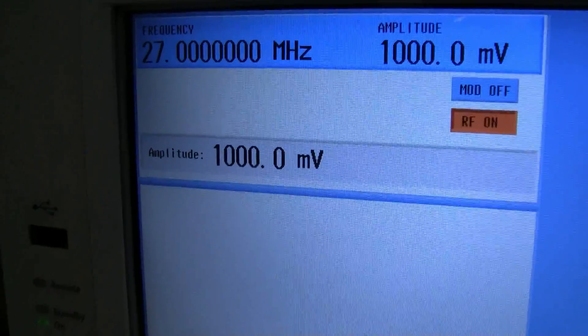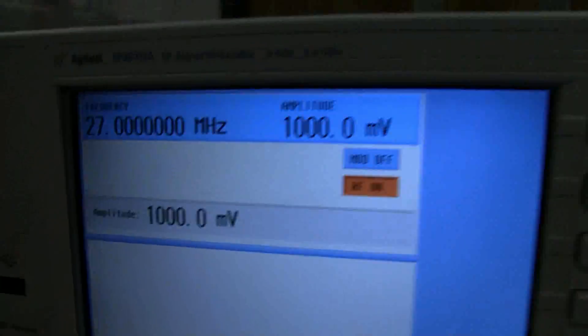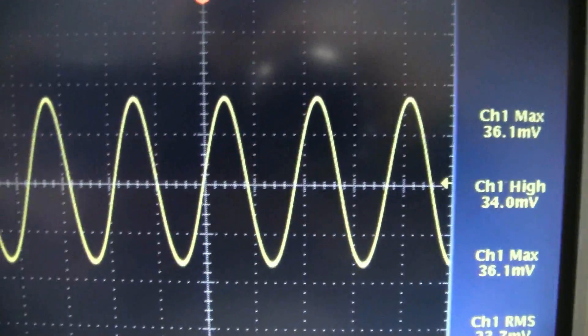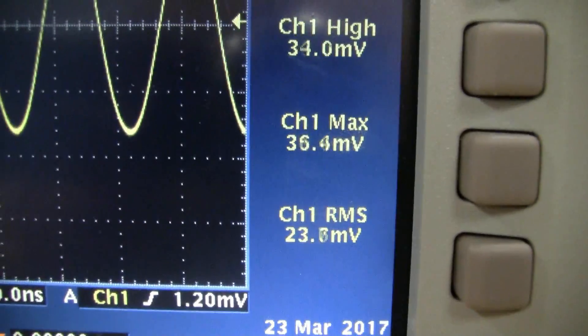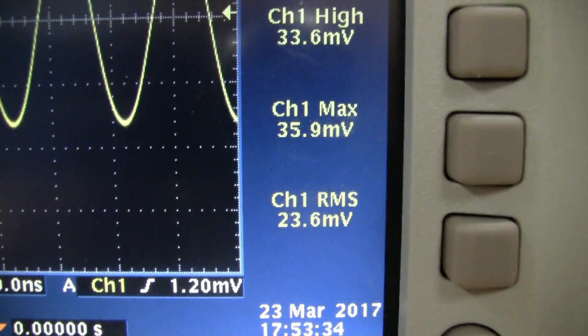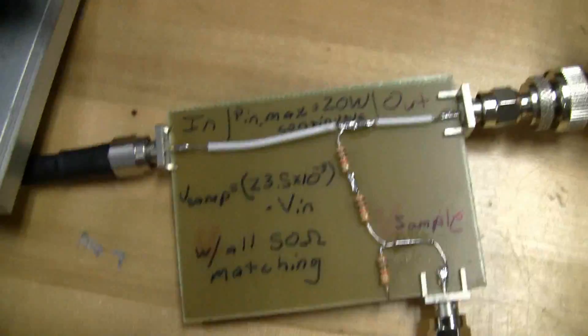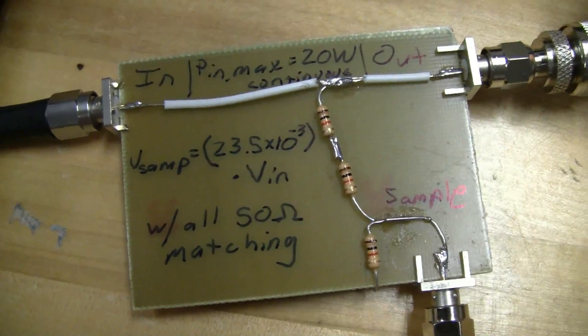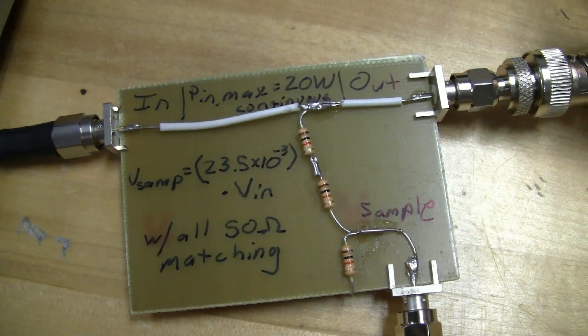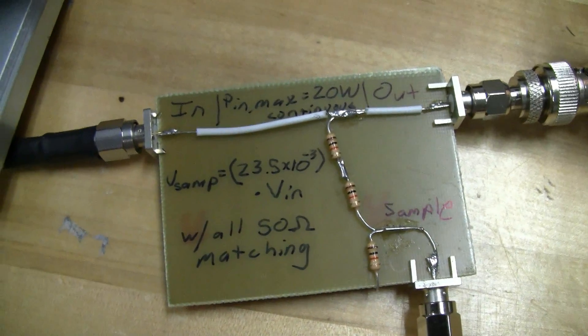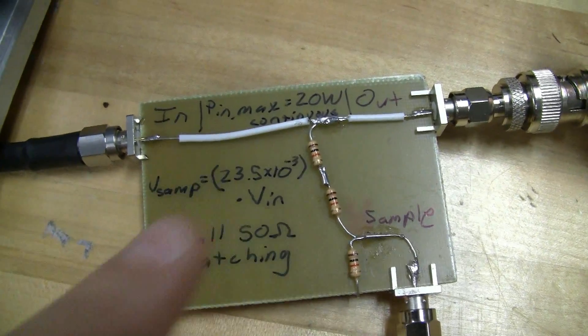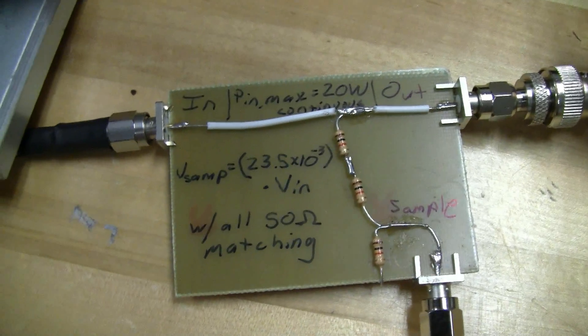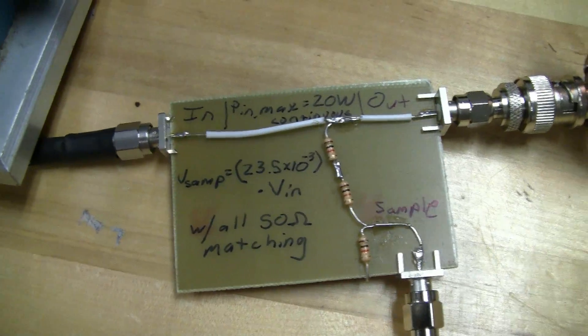So right now I have the signal generator set up over here at 27 MHz and we have 1 volt RMS. And we're measuring over here on the oscilloscope. Our RMS value is 23.6 thereabouts millivolts. And so that coincides with just the test I did when I made the board. The sample voltage is 23.5 times 10 to the negative 3 times VIN. And so you can do the math on that and it works out with the input versus the output. So that ratio isn't terribly important as long as you know what it is. And then you can backtrack and calculate what your radio output is.